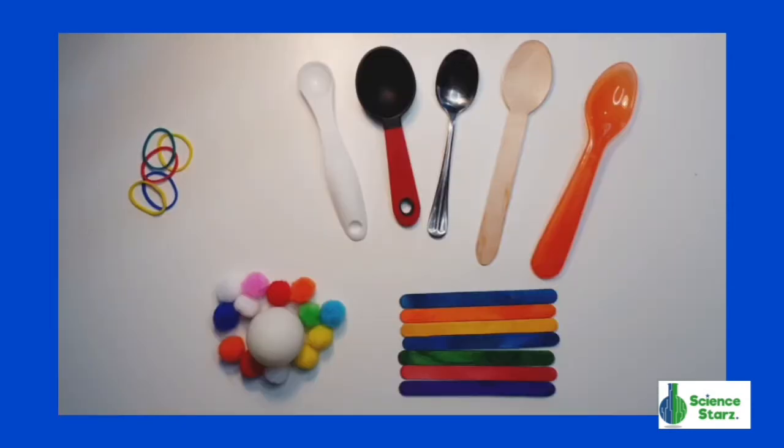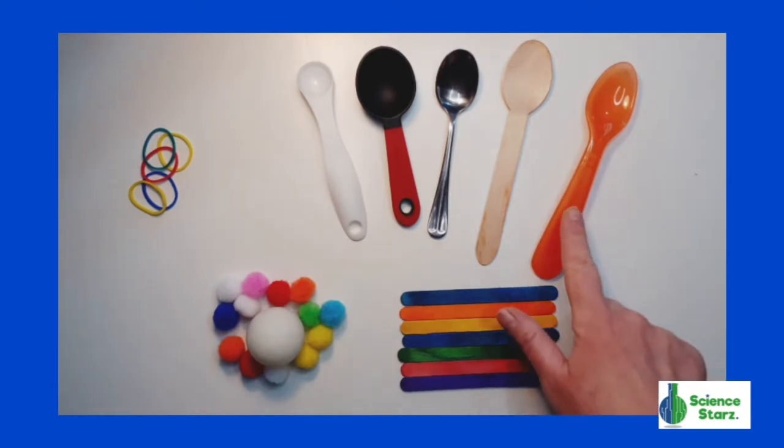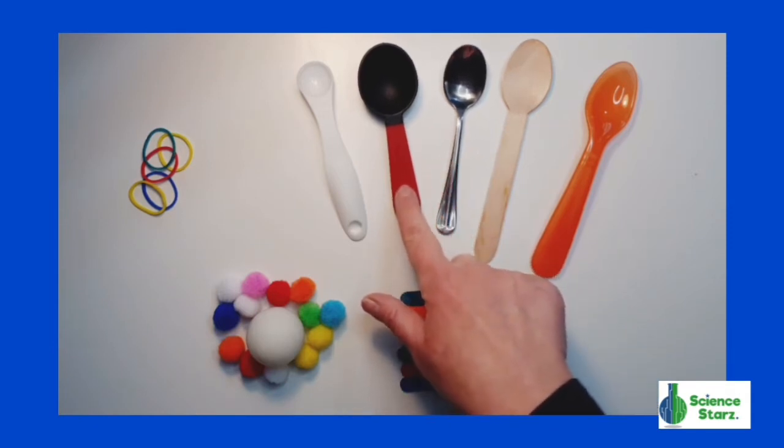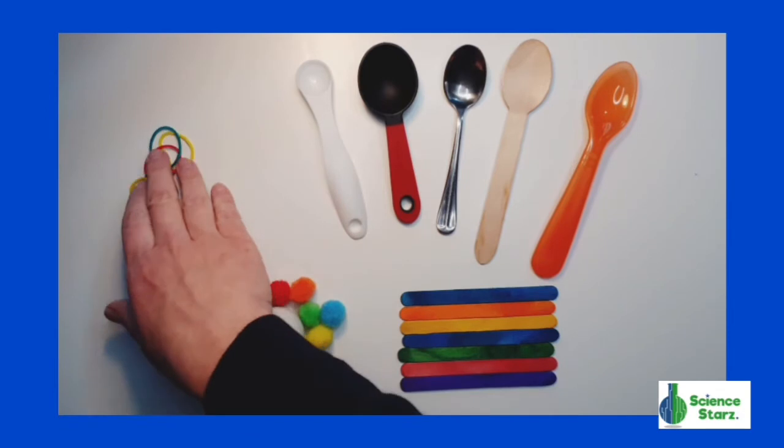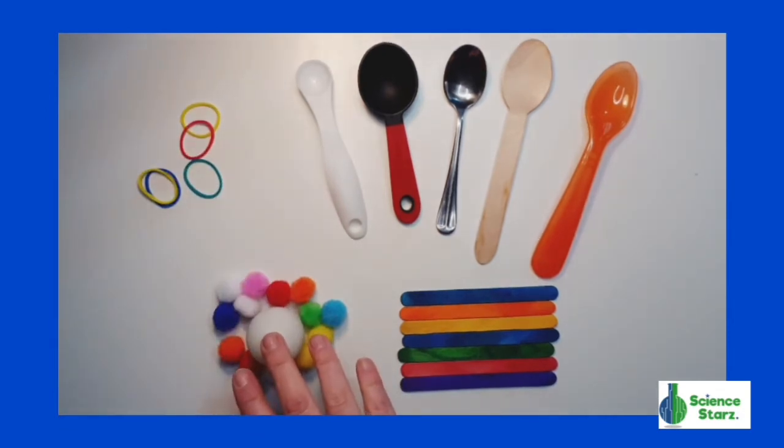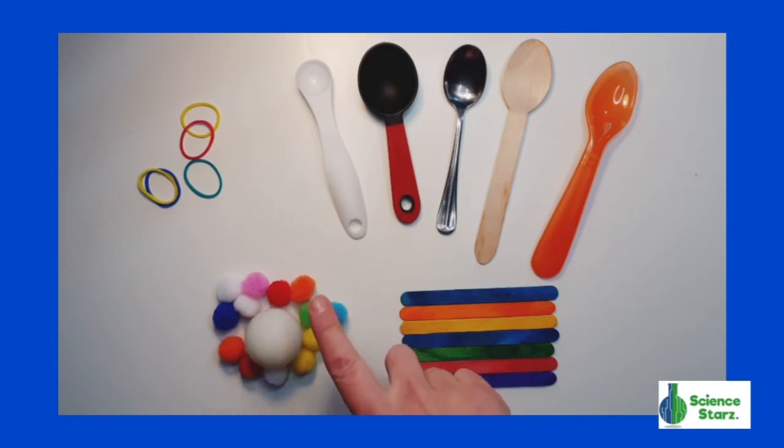You will need seven craft sticks or lolly sticks, a spoon of some sort. Here you see a variety of different spoons you could use. You will need six elastic or rubber bands and some things to launch. It can be pom-poms or ping-pong balls or anything lightweight. Nothing too heavy as we do not want to injure anyone.